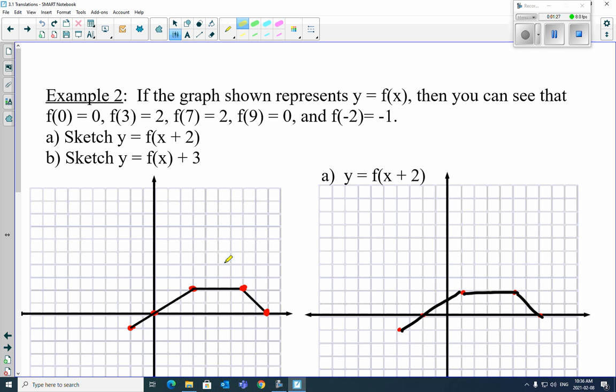What happens when we do things to it? So sketch the graph f of x plus 2. That is going to take the whole thing and shift it 2 to the left. So it's going to shift every point 2 to the left. That's not that bad.